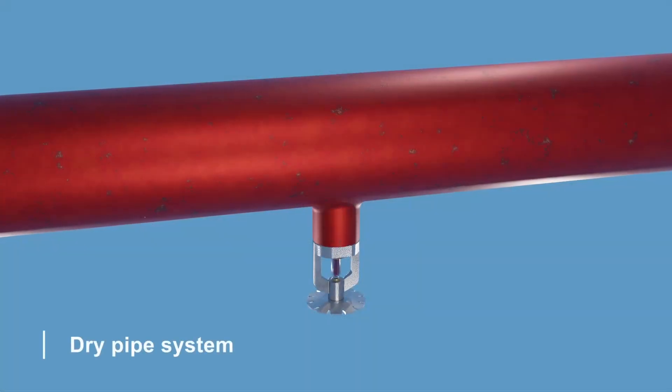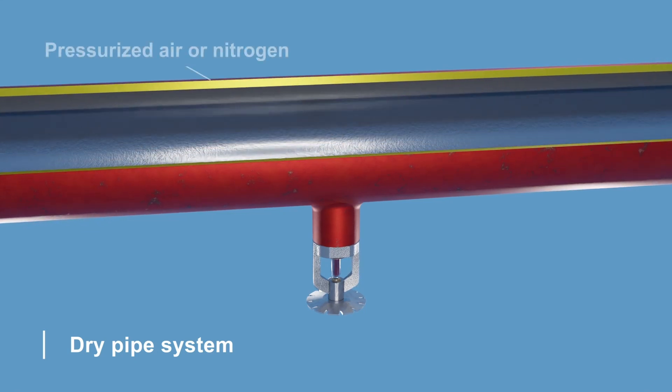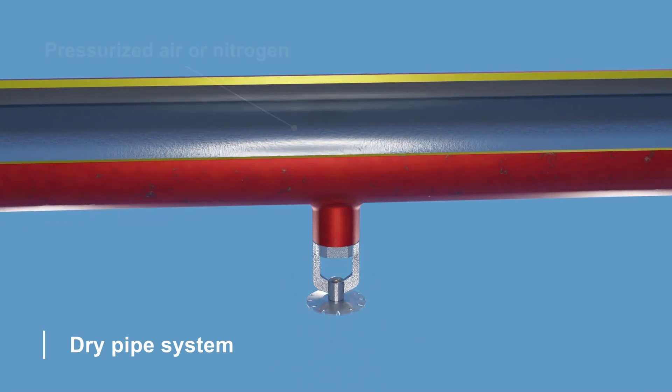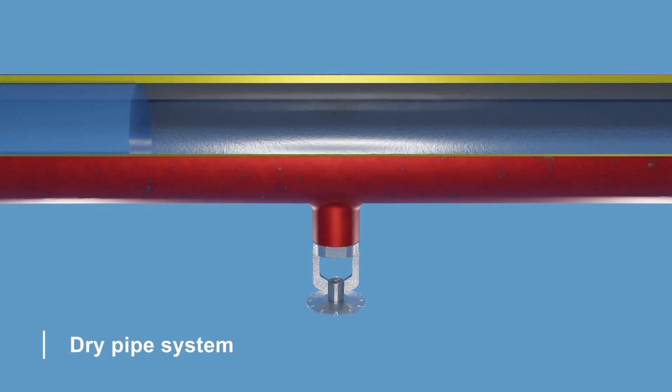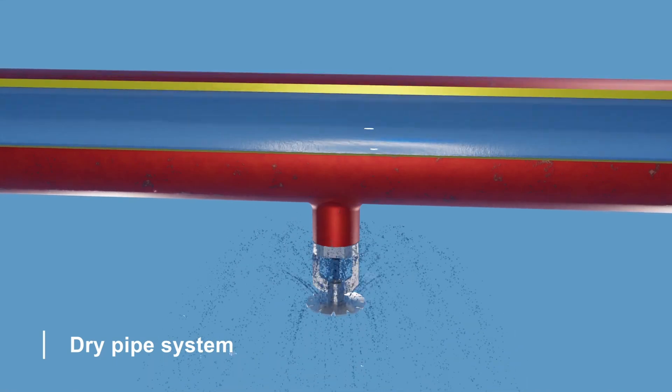Dry pipe sprinkler systems store pressurized air or nitrogen in the pipes instead of water. When the sprinkler head is activated, the air pressure drops, a valve opens and releases water into the pipes. The water then flows through the open sprinkler head onto the fire.